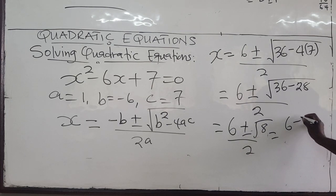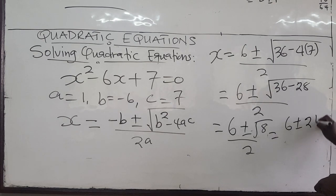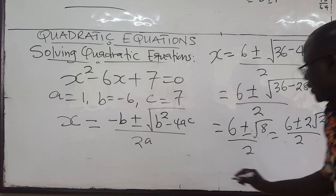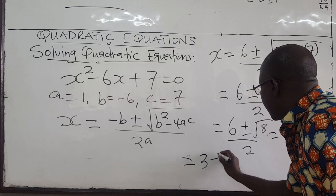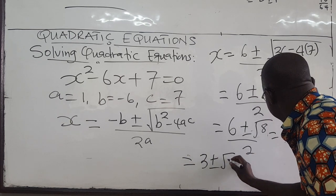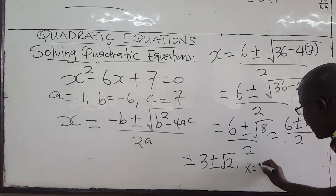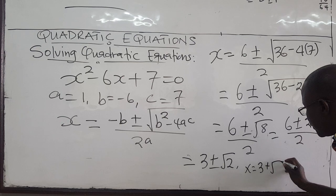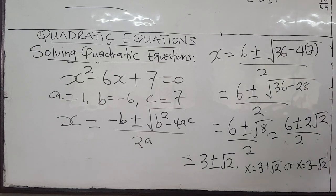This is 6 plus or minus — 8 = 4 times 2, so the square root of 8 is 2√2 — all over 2. We can simplify: 6/2 = 3, and 2√2/2 = √2. So the values of x are 3 + √2 or x = 3 minus √2.